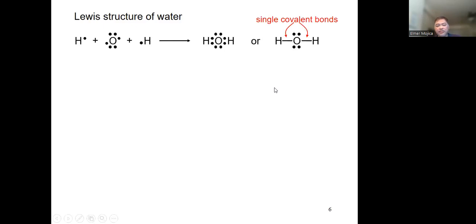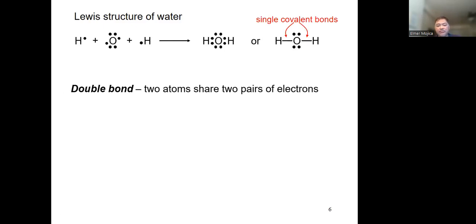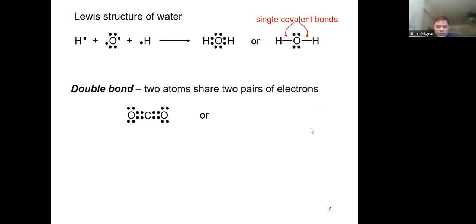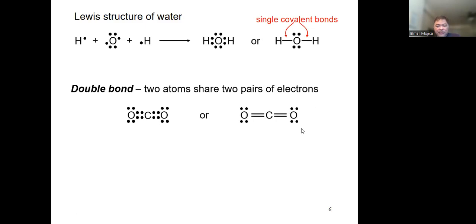For a double bond, two atoms share two pairs of electrons — four electrons total being shared between two atoms — and it is written with a double line.